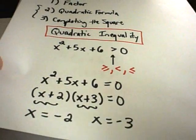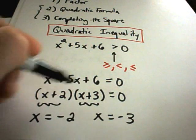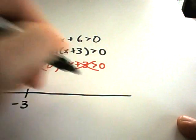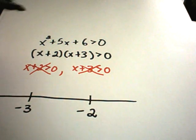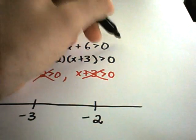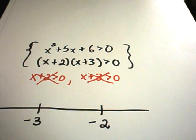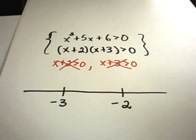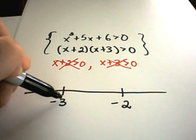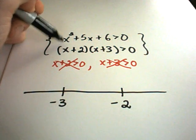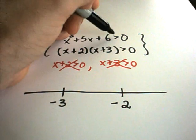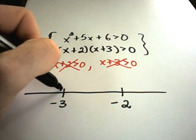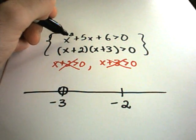The solutions to our equivalent quadratic equation were x = -2 and x = -3. What you do is make a number line and put those numbers on it. Then you have to plug -3 back into your inequality — and notice if you plug -3 in, you get 0 on the left side. The question is: is 0 > 0? It's not, so we put an open circle to indicate that -3 does not satisfy the inequality.